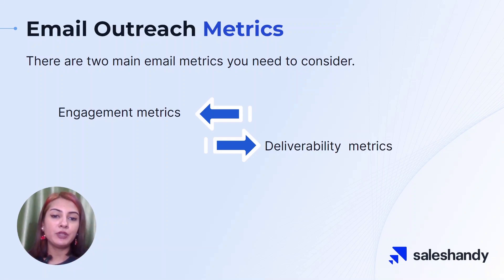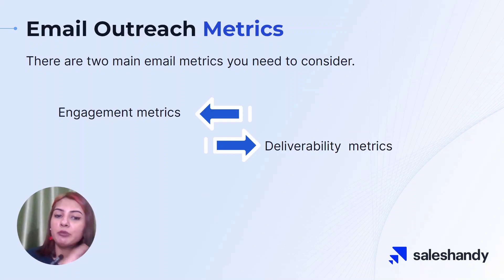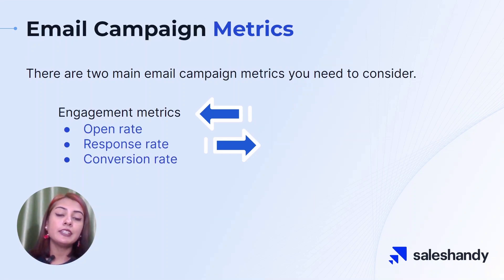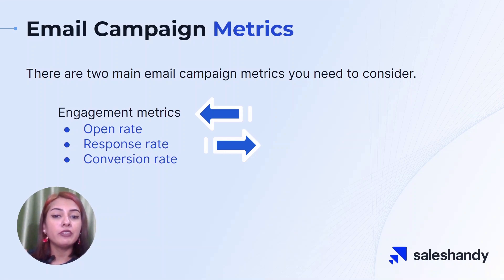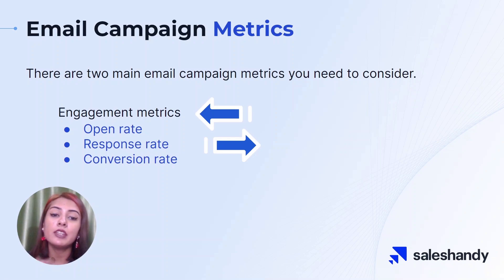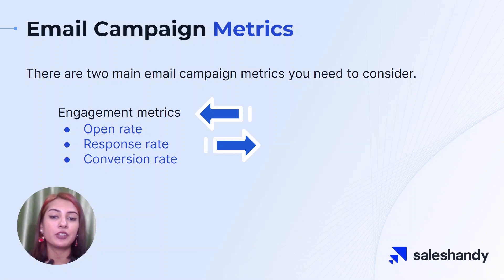We have engagement metrics and deliverability metrics. Engagement metrics measure how well your emails resonate with your audience. Some examples of engagement metrics include open rate, click-through rate, and conversion rate. These metrics can help you understand how interested your audience is in the content of your emails and how well your emails are driving them to take action.